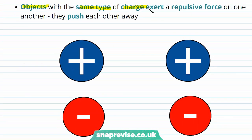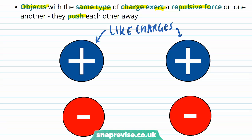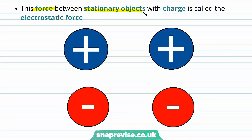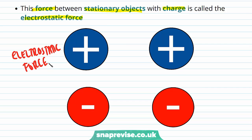Objects with the same type of charge exert a repulsive force on one another — they push each other out of the way. So here we have two sets of like charges. These two positive charges are going to experience a repulsive force away from each other, and similarly these negative charges will also experience a repulsive force. This force between stationary objects with charge is called the electrostatic force, and here it is repelling the like charges away from each other and attracting the opposite charges towards each other.